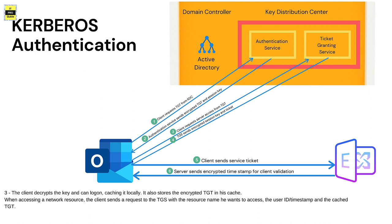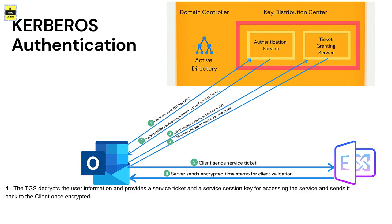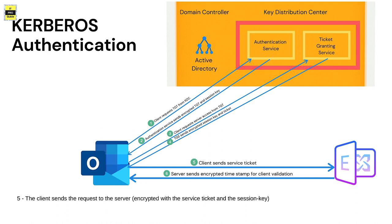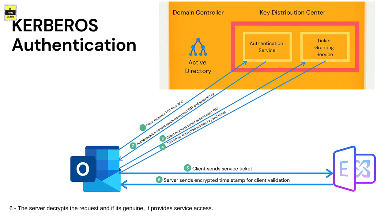Whenever the client wants to access a resource such as the Exchange Server, it sends the current TGT to the Ticket Granting Service along with the service principal name of the resource. The TGS sends a valid session key for the service back to the client. The client forwards the session key to the Exchange Server, and the Exchange Server completes authentication by this method.